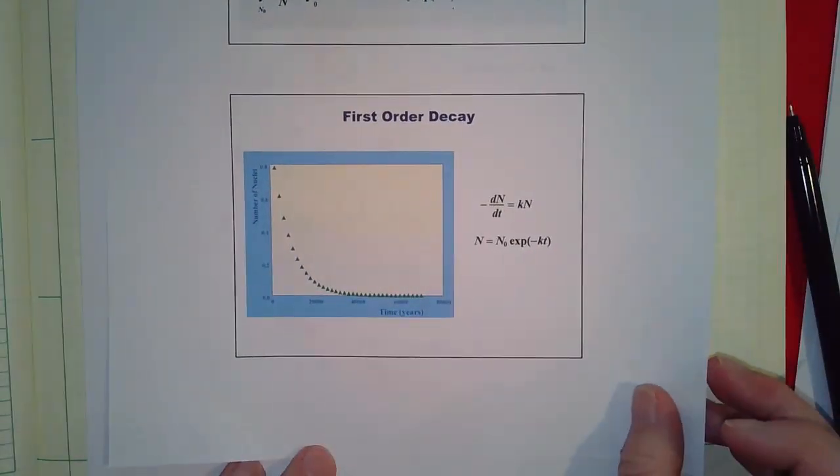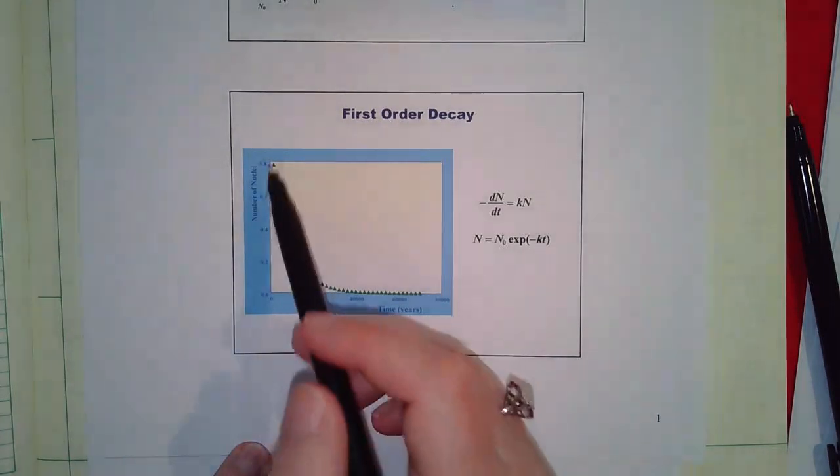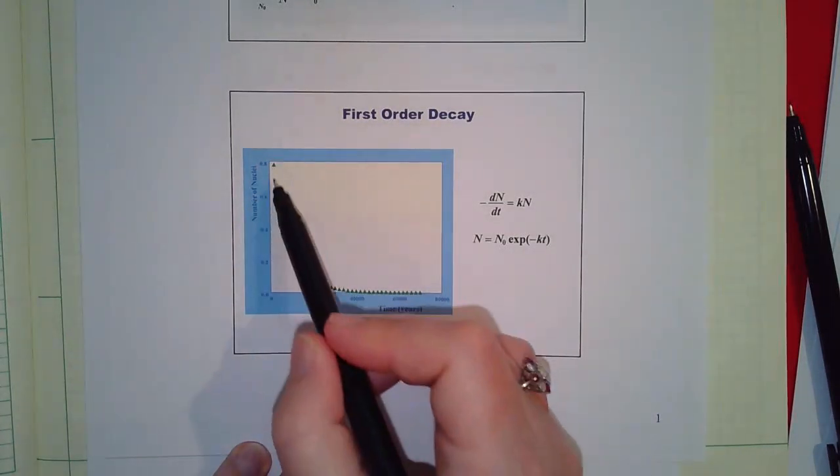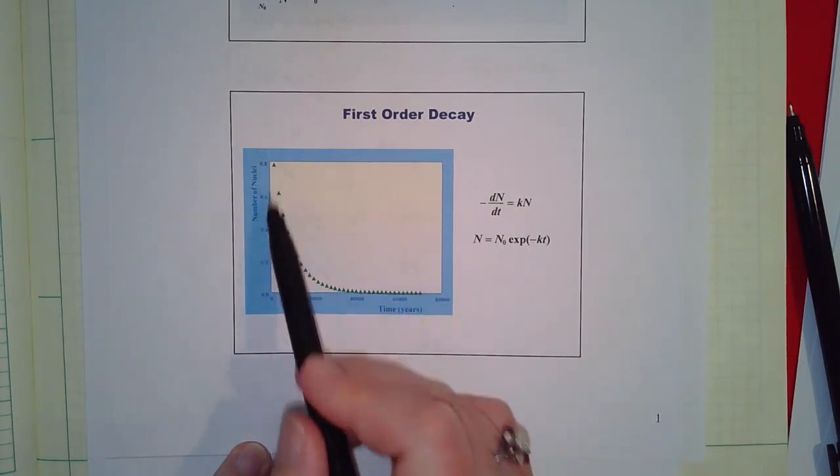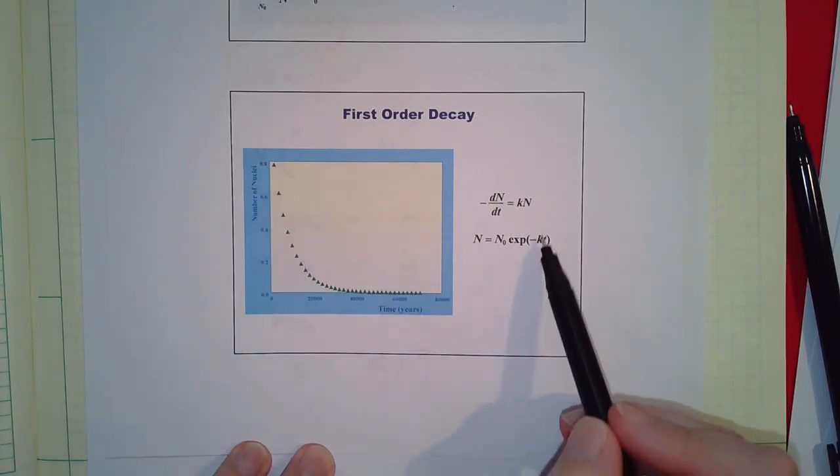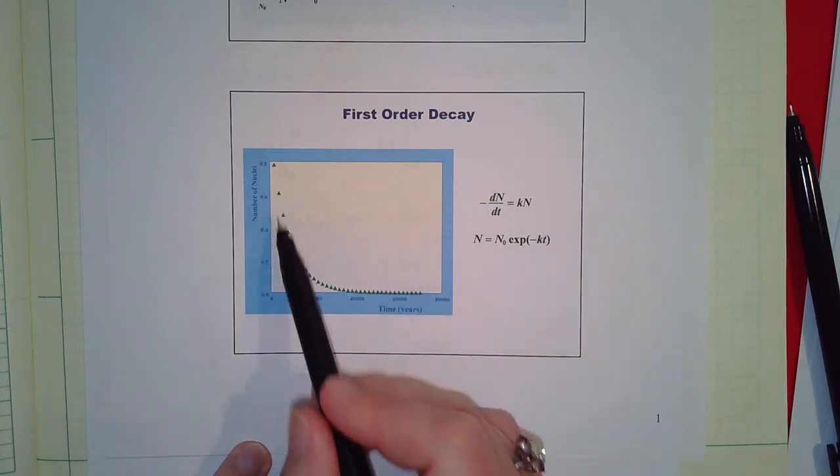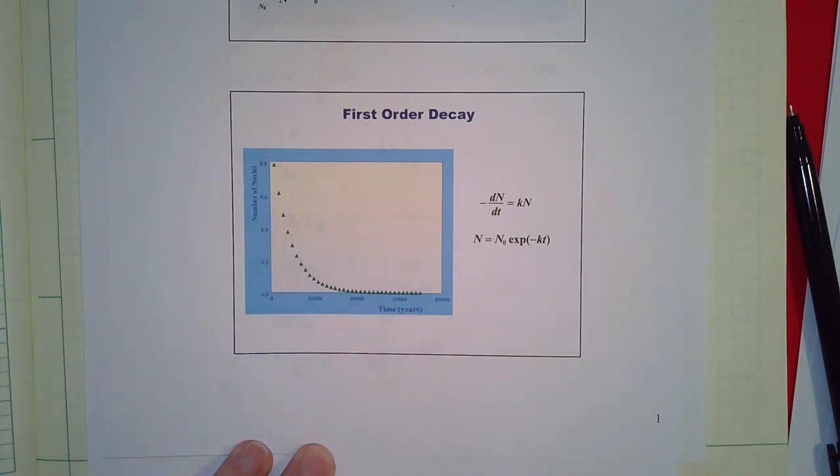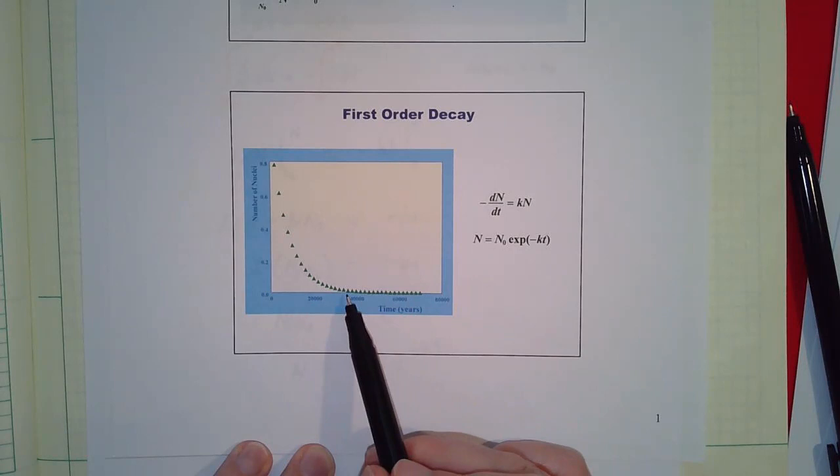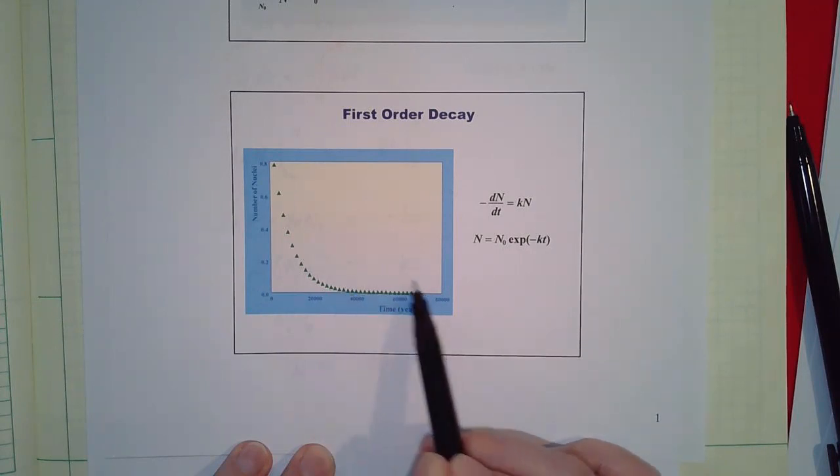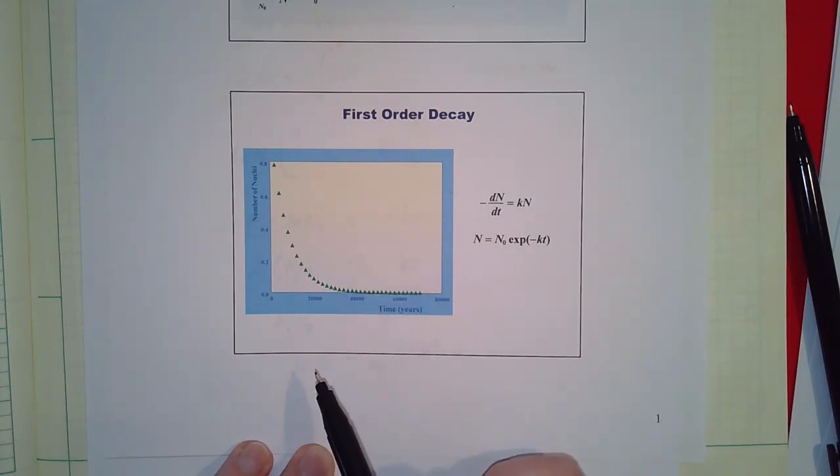Which there's the graph if we plot this out. So the number of nuclei versus time in years, and this is for C14, so this is how you would do radiocarbon dating. And we know k very well for C14 and we can measure the concentration of C14 very accurately, so that is how we do radiocarbon dating. But once we get out here there's not enough change so it becomes inaccurate when things are too old.